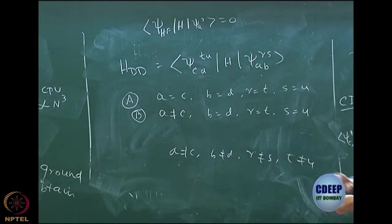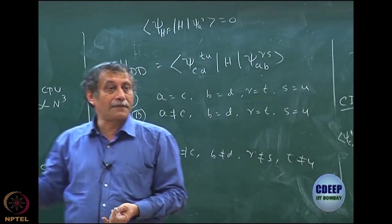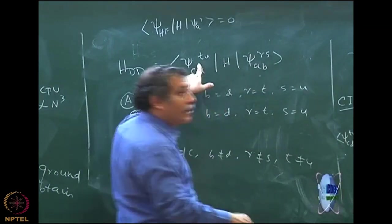But eventually, if you look at the differences, they have differences of RS and TU in different places. Here you have RS and CD, here you have TU and AB.